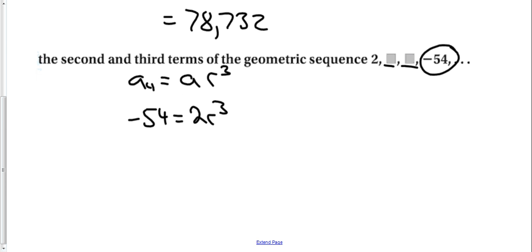So, I divide by 2. That would be negative 27 equal r to the third. And then to clear something to the third power, you take the third root. So, the third root of negative 27 is negative 3.